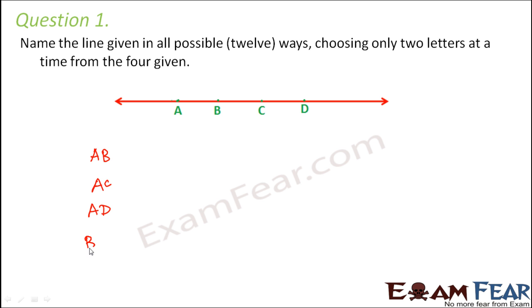It could also be BA because though AB and BA would mean the same thing but still that's a different name altogether. Like how you have a name for your, an official name which is the name in your school and another nickname which may be your parents or your friends call you.